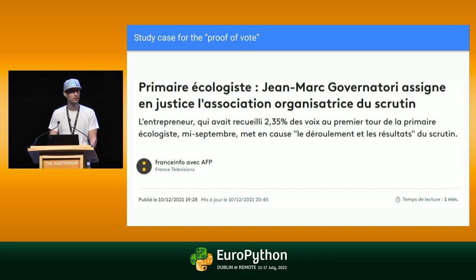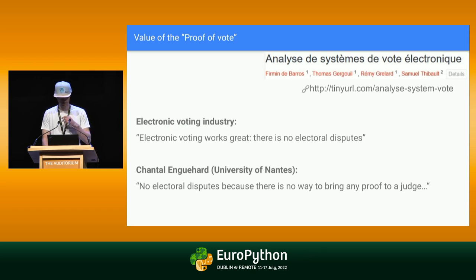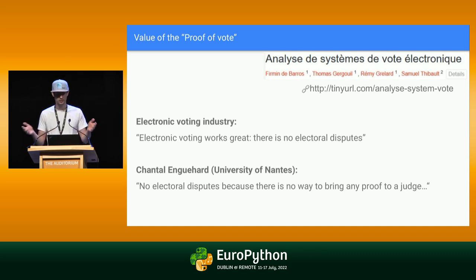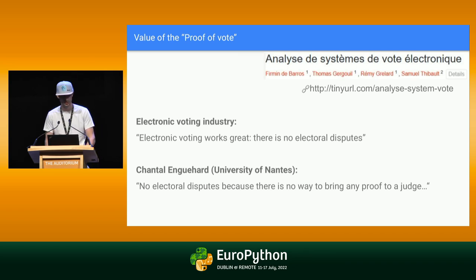For a real case study: the Green Party election. The person who arrived last really couldn't believe it, said the election might have been rigged, and went to court. Nothing could be proved. The funny thing is there's a quote from researcher Chantal Unger, specialized in electronic voting. The electronic voting industry says electronic voting works great because nobody ever says there is an electoral dispute. Why? Because there is no way to prove something went wrong. If you have physical evidence, it's much simpler to show something fishy happened than if everything happened on a computer.